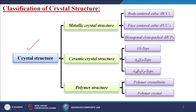If we do the classification of crystal structure, it is divided into three parts: metallic crystal structure, ceramic crystal structure, and polymer structure. For metallic crystal structures, there are three types: BCC (body centered cubic), FCC (face centered cubic), and HCP (hexagonal close packed). For ceramic crystal structures, there are AX type, AMXP type, and AMBNXP type. For polymer structure, we consider polymer crystallinity and polymer crystals.